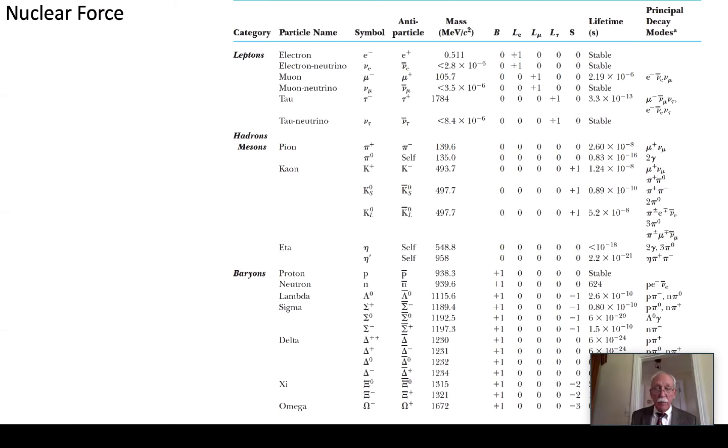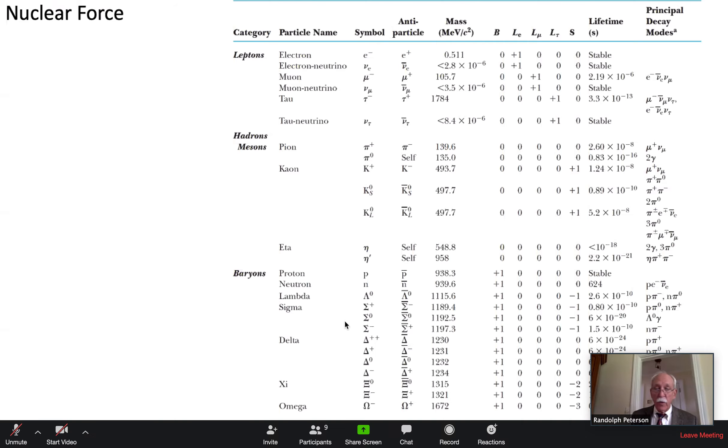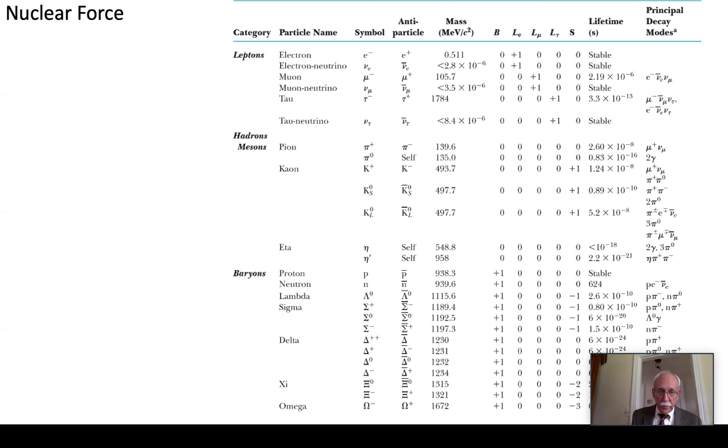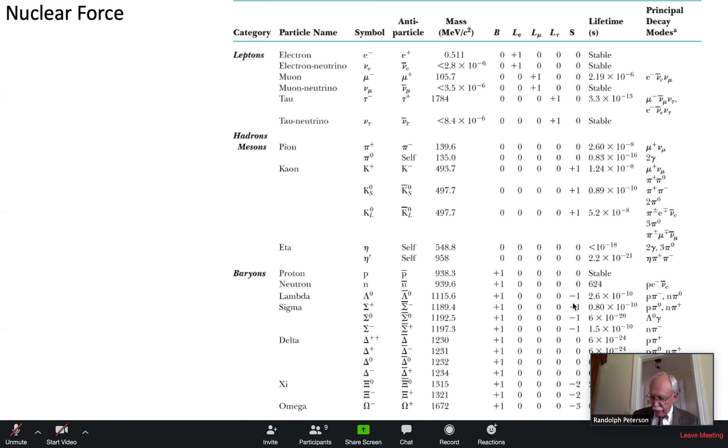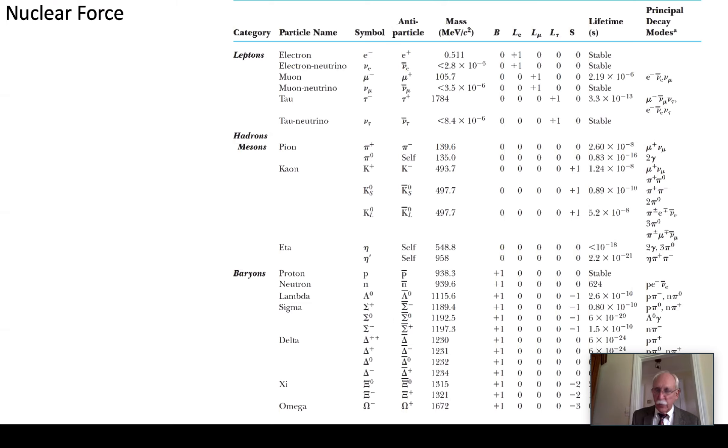So and then the sigma plus down below is minus one. So strangeness is conserved in that reaction on top isn't it? That is correct. Zero on the left zero on the right. Well the bottom one strangeness is zero on the left but the pi meson doesn't have a strangeness. So we end up with just the minus one from the sigma plus. So that's not observed.